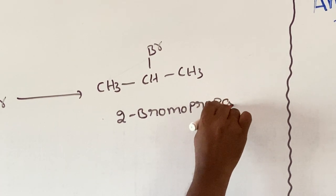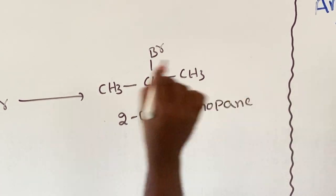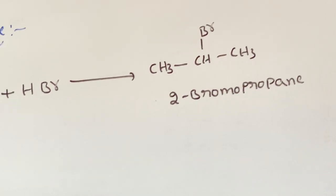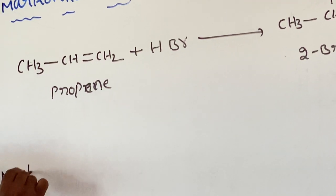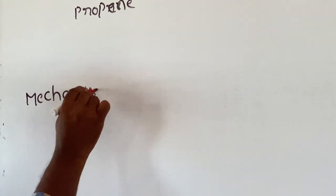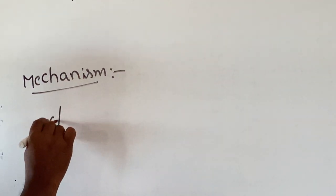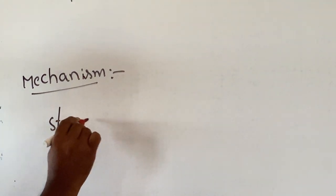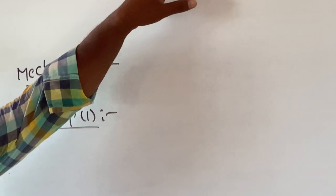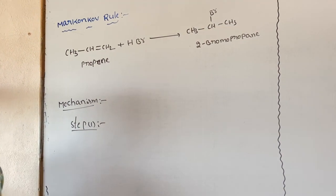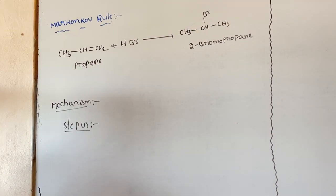This reaction mechanism is involved in three steps. Step 1: the unsymmetrical reagent, hydrogen bromide, undergoes ionization to give H⁺ and Br⁻.